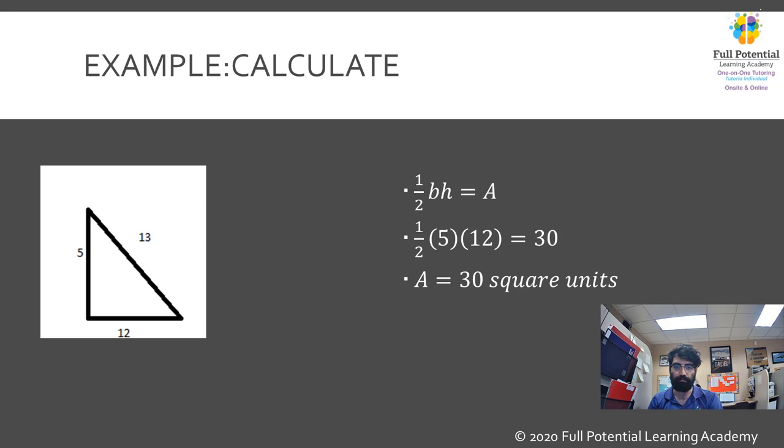We can then substitute b and h in the area formula as so: one-half bh equals A. Replacing b and h with 12 and 5, we get one-half times 12 times 5, which equals 30. Therefore, we calculate that this triangle has an area of 30 square units.